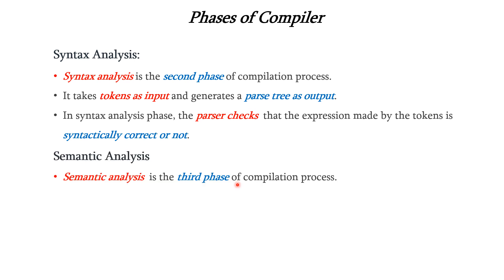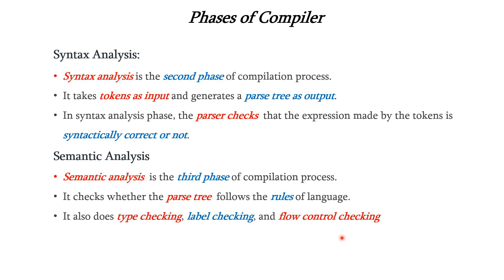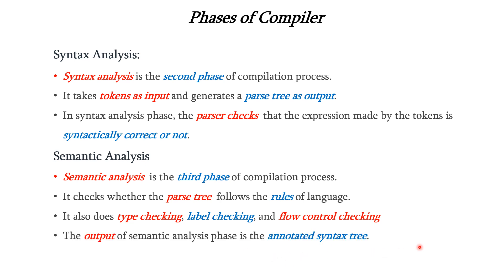The next phase is semantic analysis. This is the third phase. It checks whether the parse tree generated by the syntax analysis is following the rules of the language. Every programming language will have its own rules. It also does type checking, label checking, and flow control checking. The input to the semantic analysis is the parse tree and the output is an annotated parse tree or annotated syntax tree.